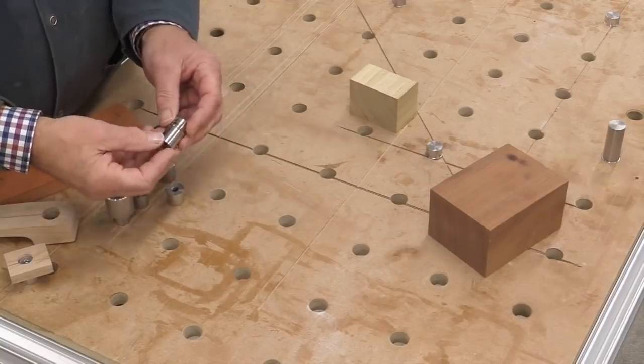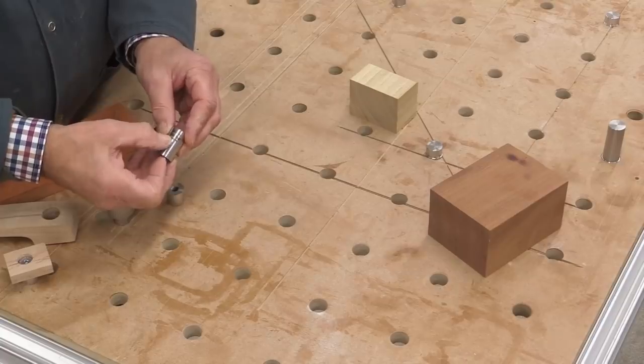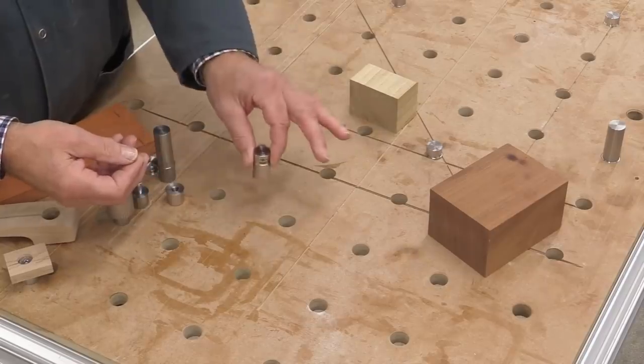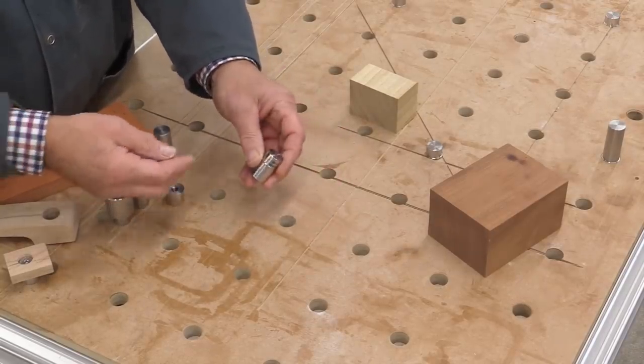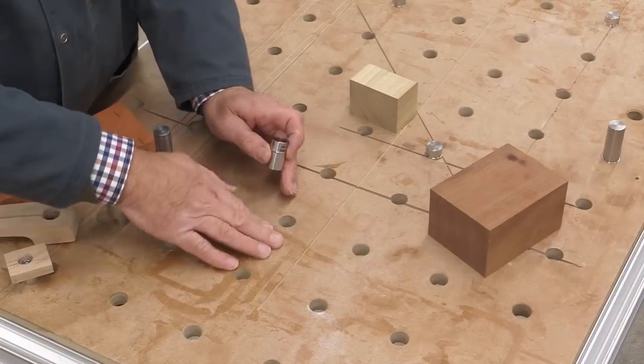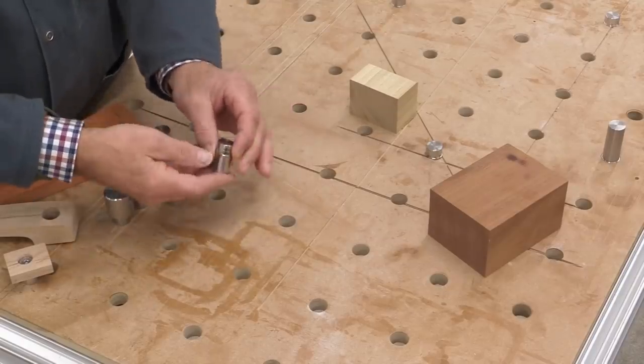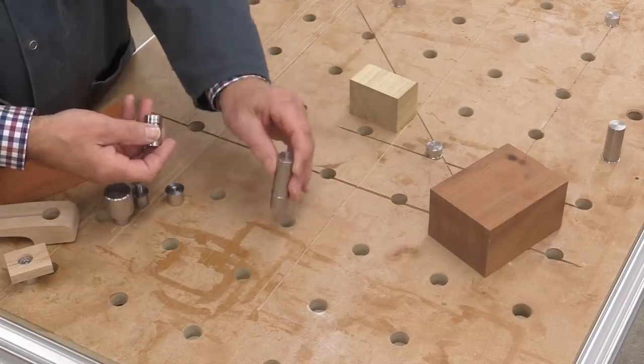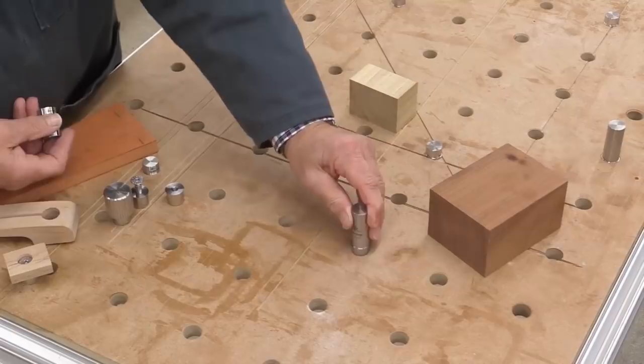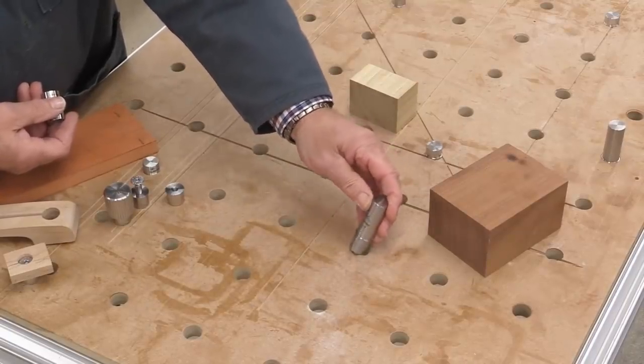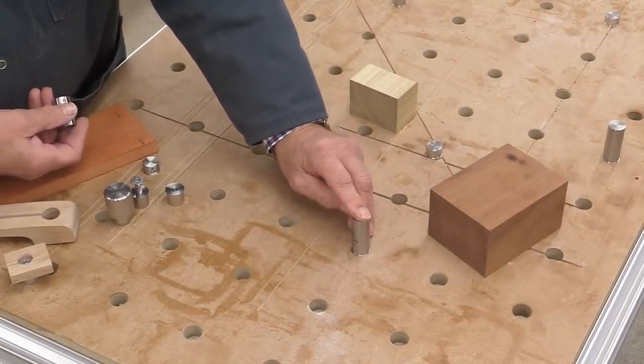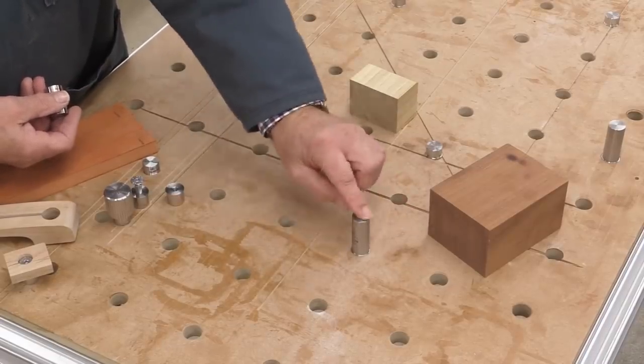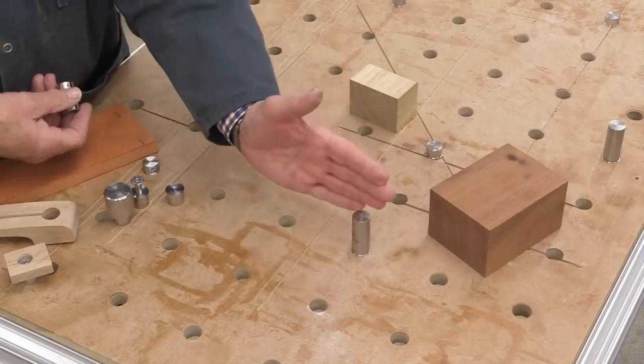Now most of the dogs in the Parf range have this unique chamfered collar here. And the idea of that is very simple. When you push it down into your hole in your benchtop, that chamfer then sits flush, yet it keeps whatever dog it is, and it might be this 50mm guide dog here. It keeps it absolutely vertical. So with this 50mm guide dog, when you push it down into the 20mm hole, the chamfer unites with the chamfered collar, and it's then sitting absolutely vertical.